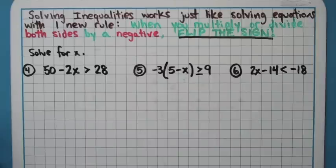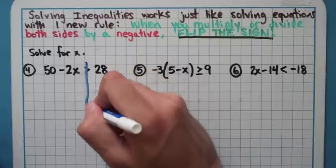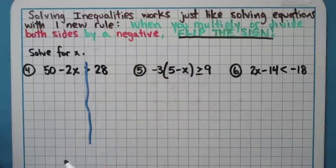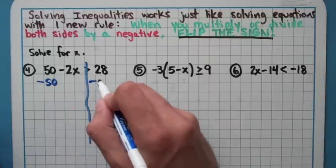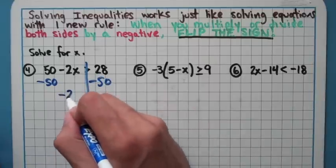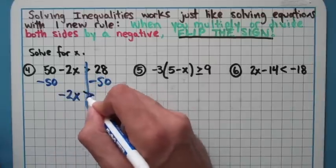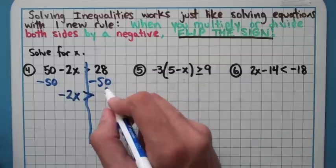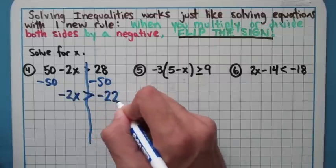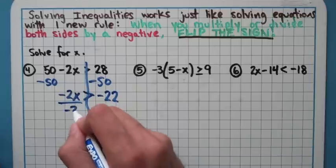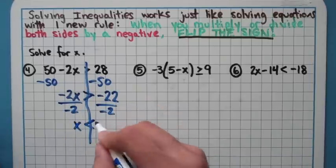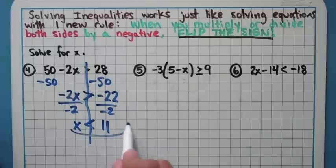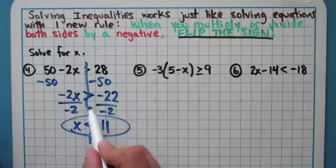I want to power through these three problems here and show you how that plays out. If you're feeling up for it, you can try out the problems for yourself and see how you did. But on this first one here, I subtract my 50. You guys should be getting pretty good at solving equations by this point. I get -2x > 28, and 28 - 50 is -22. When I divide by -2 on both sides, my sign gets flipped. My answer is x < 11. Divided by a negative, so I turned that sign around.